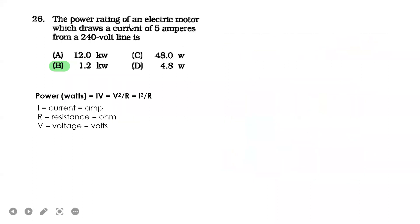Next. The power rating of an electric motor which draws a current of 5 amperes from a 240-volt line is 1.2. We already showed this formula earlier. But now we're looking for power. What you'll get when you multiply amperes and volts is watts, or kilowatts, so you need to convert again. Don't forget that.